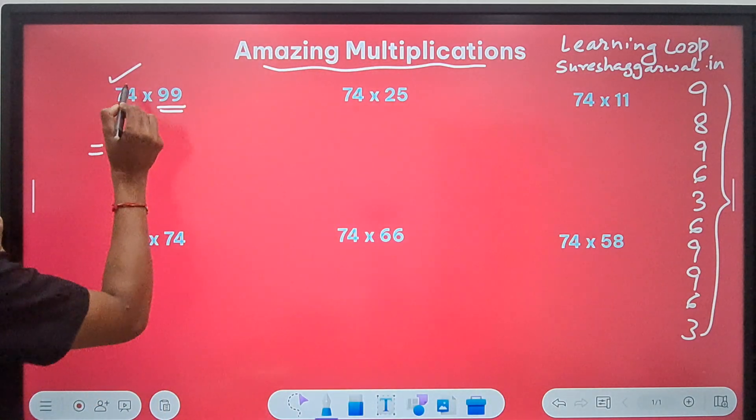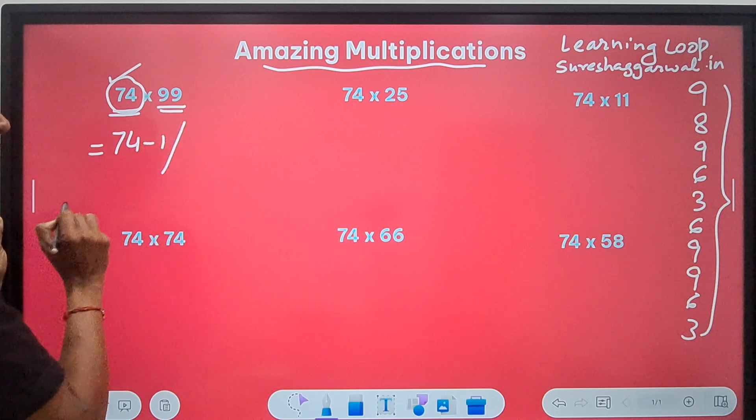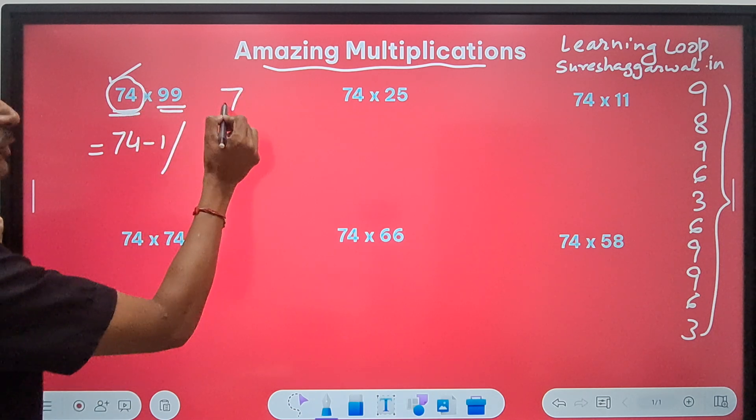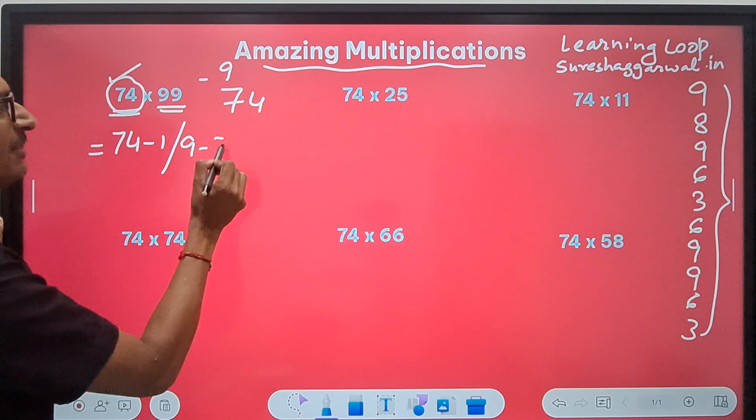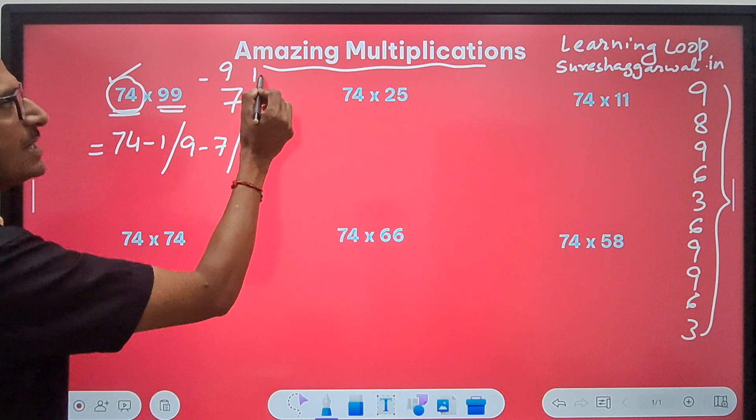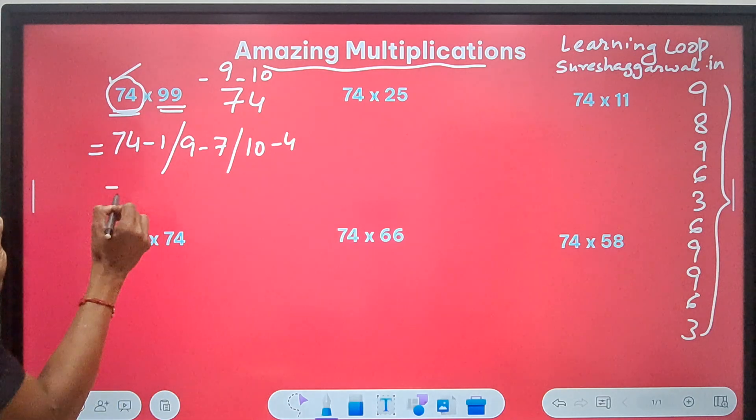What you do here is reduce this number by 1. So, 74 minus 1 and then subtract the first number from 9. So, 9 minus 7 and subtract the last number from 10. So, 10 minus 4.